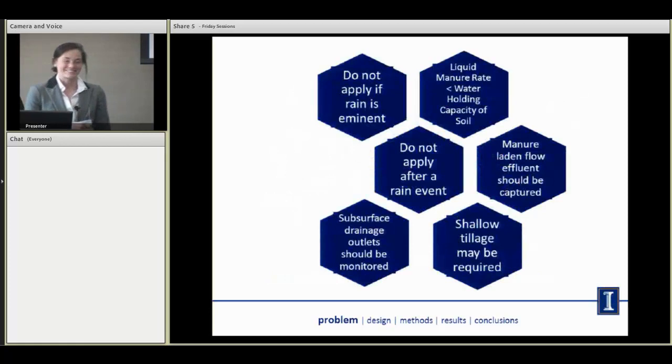Sorry, I'm a little nervous. A lot of things are already done to prevent the risk associated with applying liquid animal manure to tile drain systems. You don't apply it if it's going to rain, if your soil is saturated. If you do have manure-laden flow, you capture the effluent, you monitor subsurface drainage outlets. A lot of people use shallow tillage. These are great, but we know that with weather and the soil system, it's so complex that sometimes you can't account for everything. Having something at the end of your tile might be an extra level of protection.